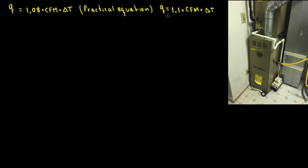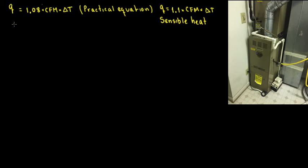That is the practical equation. But this is actually called the sensible heat equation. In this video we're going to be checking where the sensible heat comes from. It actually comes from the fluid mechanics and thermodynamics equation: Q equals mass times C times delta T.